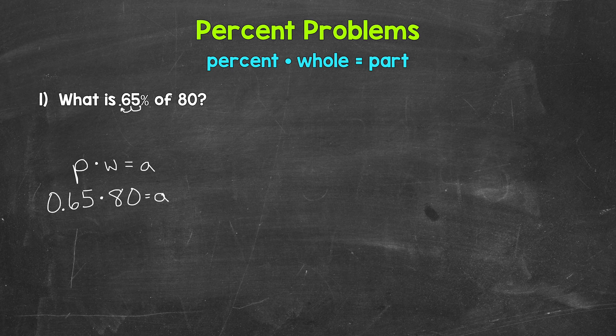For example, in number one, we have what is 65% of 80. So the part is unknown here. We have what is. So those are some things to keep in mind when it comes to percent problems. Now we solve.